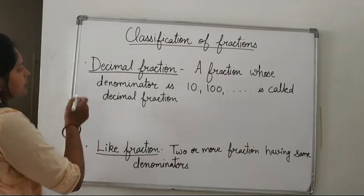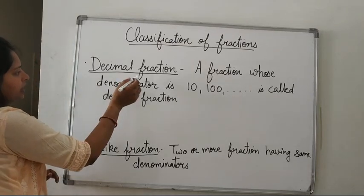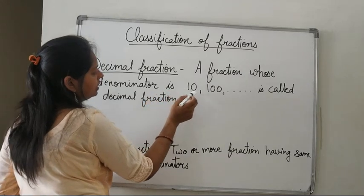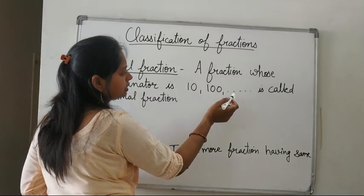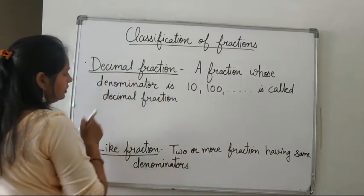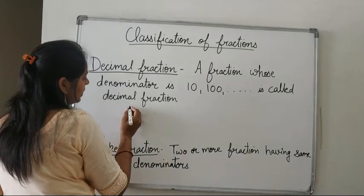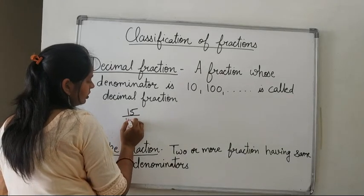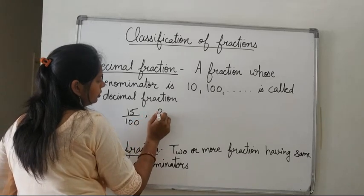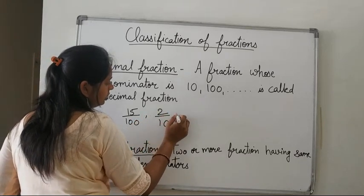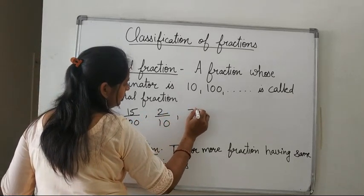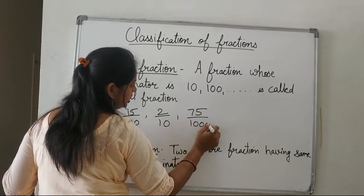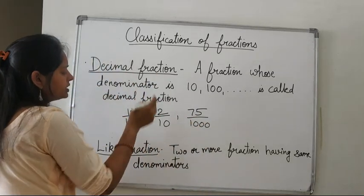Next is decimal fraction — a fraction whose denominator is 10, 100, or 1000 is called a decimal fraction. For example, 15 upon 100, 2 upon 10, and 75 upon 1000 are examples of decimal fractions.